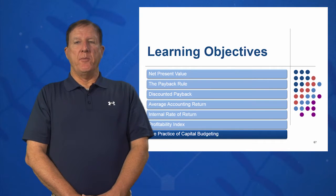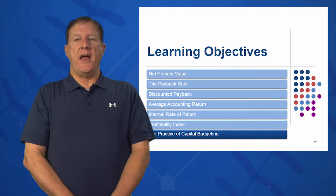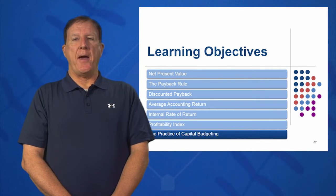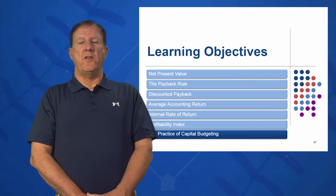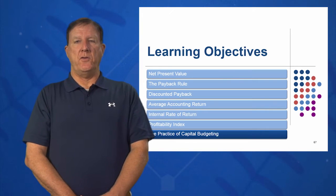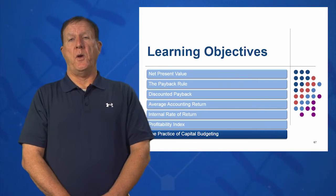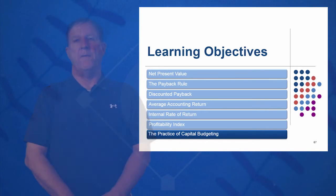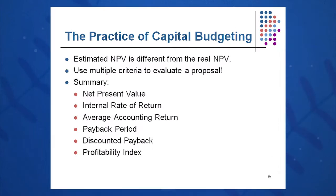Our seventh and final learning objective in session nine is the practice of capital budgeting. Which of these six methods is most heavily used in industry, and which ones should you pay most attention to? The ones most heavily used in practice in industry are NPV, definitely ranked number one, IRR, and payback.